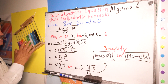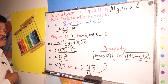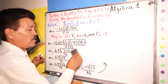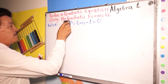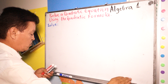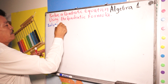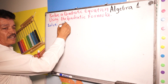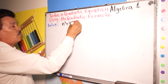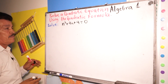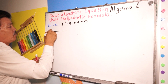That's the solution of the quadratic equation using the quadratic formula. Let's try to solve another, simpler problem. The new problem is n squared plus 4n plus 4 equals 0. First step: write the formula.